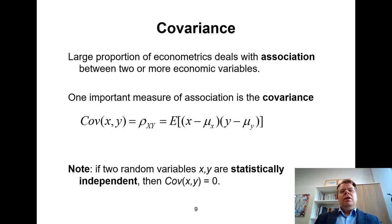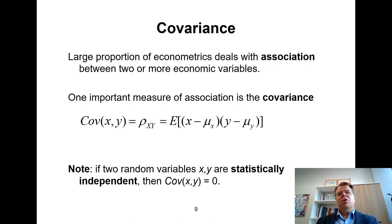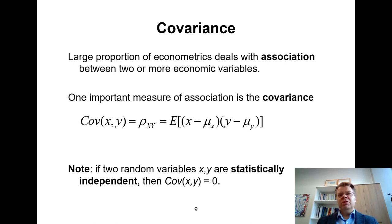Now, in econometrics, we are very often interested in association between two or more random variables. In statistics, an important measure of association is covariance. Here's how population covariance is defined. I will discuss the difference between population covariance and sample covariance a little bit later, but this is for the population covariance.